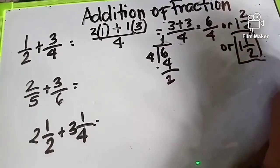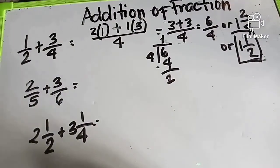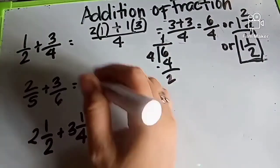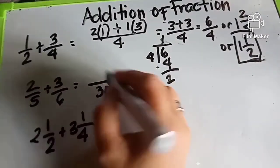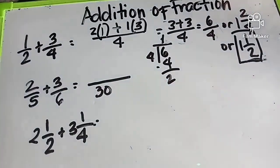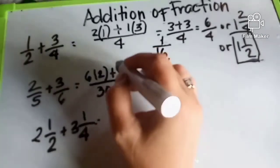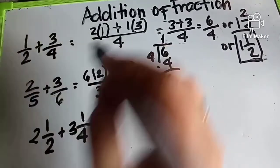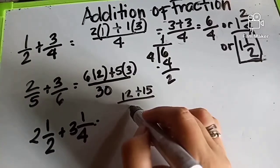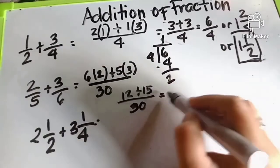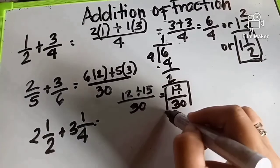Pag hindi ganyan yung answer mo, mali pa rin kasi hindi siya naka-reduce to the lowest term. Ito naman: ang LCD ng 5 and 6 is 30. 30 divided by 5 is 6, multiplied by 2. 30 divided by 6 is 5, multiplied by 3. 6 times 2 is 12, plus 15 divided by 30. So the answer is 17 over 30 — ito na yung pinaka-final answer.